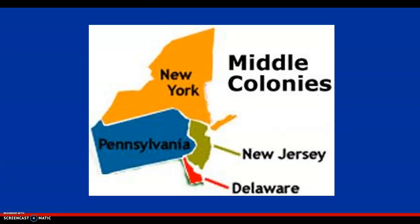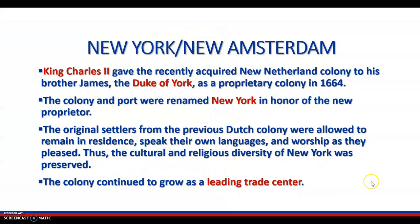The Middle Colonies. New York and New Amsterdam. King Charles II gave the recently acquired New Netherlands colony to his brother James, the Duke of York. As a proprietary colony in 1664, the colony and port were renamed New York in honor of the new proprietor. The original settlers from the previous Dutch colony were allowed to remain in residence, speak their own languages, and worship as they pleased. Thus, the culture and religious diversity of New York was preserved, and the colony continued to grow as a leading trade center.